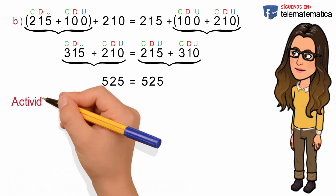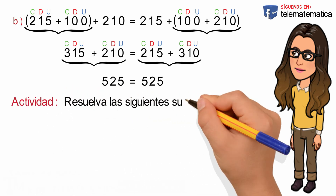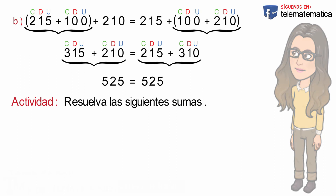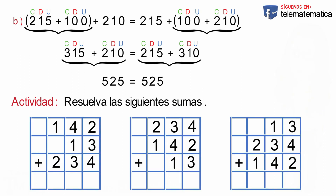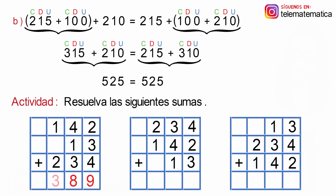A continuación, veamos una actividad. Resuelva las siguientes sumas. Tenemos tres operaciones y van a completar el resultado de cada una de ellas. En la primera tabla, el resultado de la columna de las unidades es 9, el resultado de la columna de las decenas es 8, y el resultado de la columna de las centenas es 3.